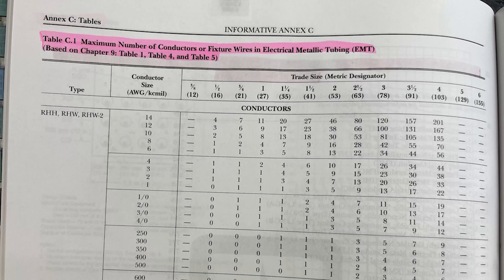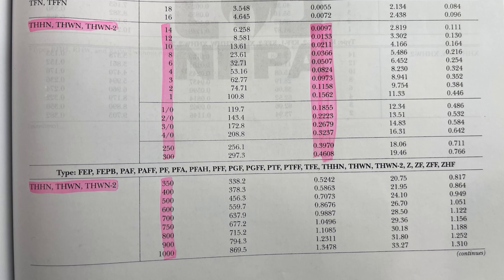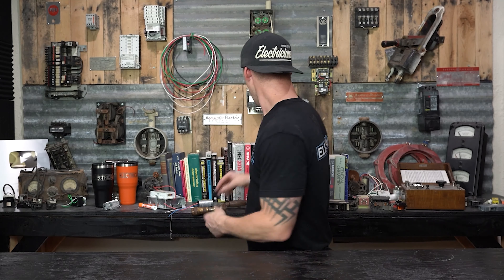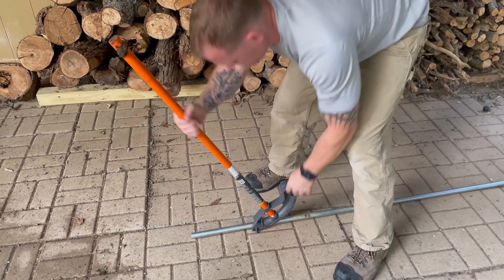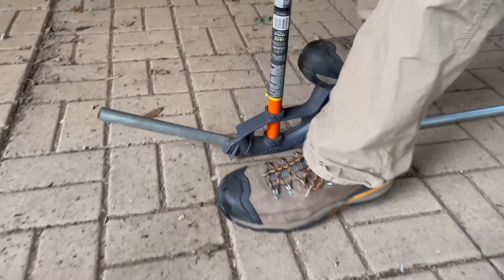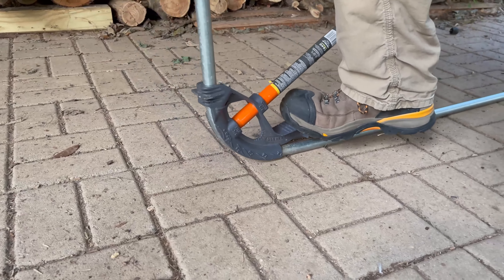When talking about conduit size, there are charts in the National Electrical Code — Annex C and Chapter 9 — that cover how many conductors of what size can go into what conduit. Today we're talking about conduit fill and how full you can make a conduit. Also in code, for rigid conduit under NEC 344.26 — Bends: Number in One Run — there shall not be more than the equivalent of four quarter-bends, or 360 degrees total, between pull points such as conduit bodies and boxes.